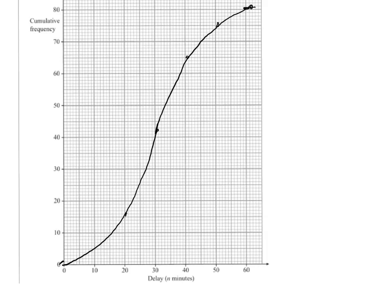I've got to find the median. Now there are 80 scores, so for the median you come across from the halfway point, which is 40, and you drop down. So the median delay is 30 minutes.